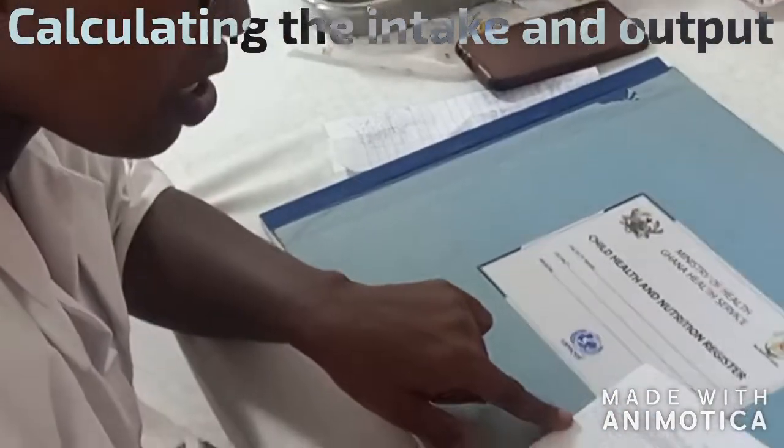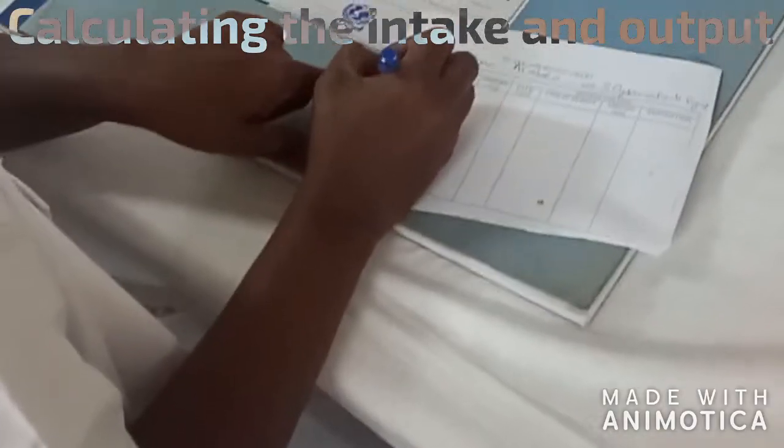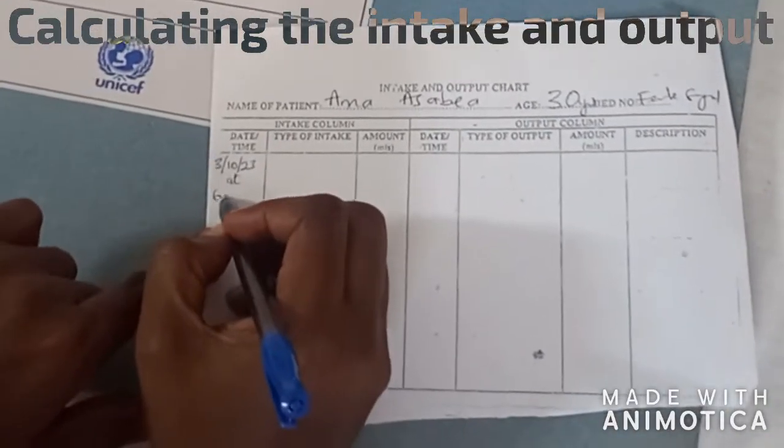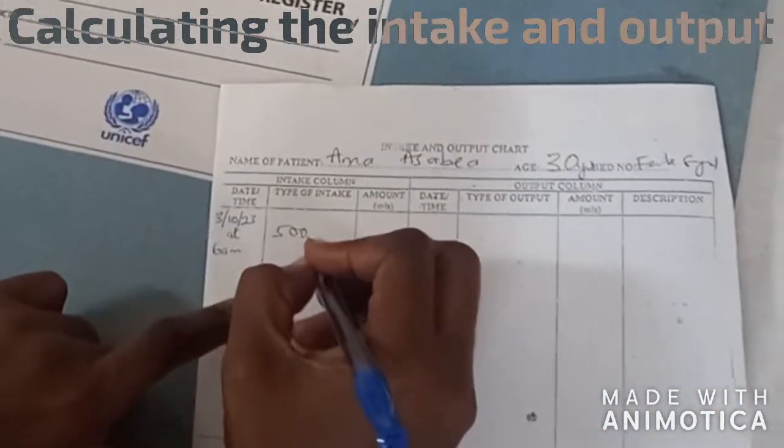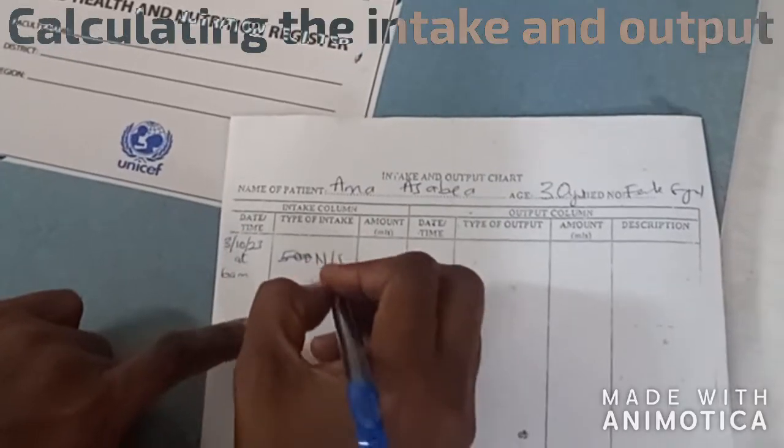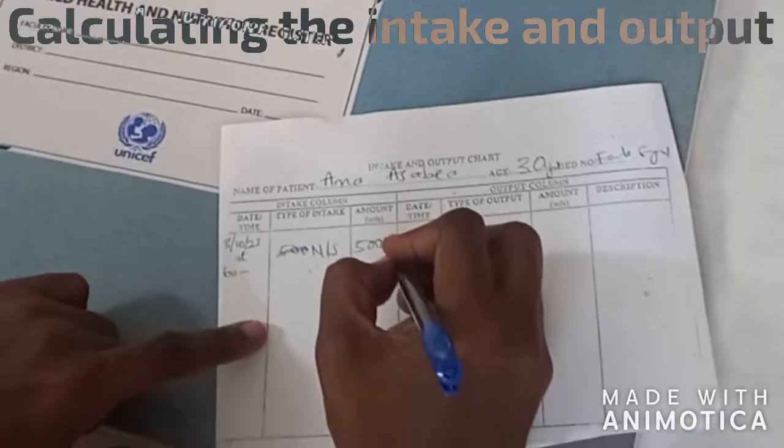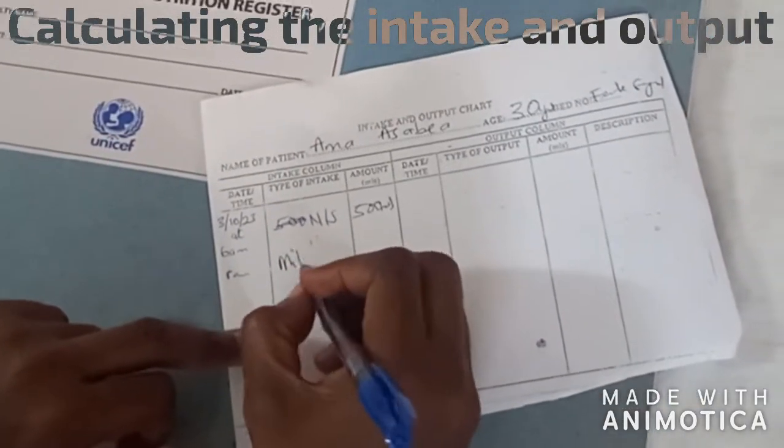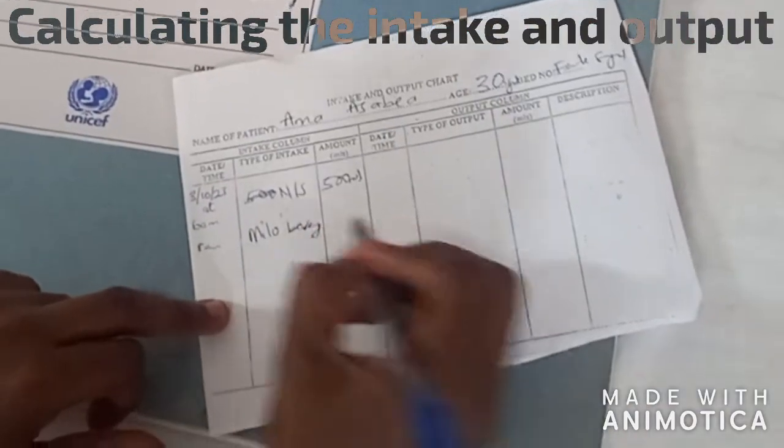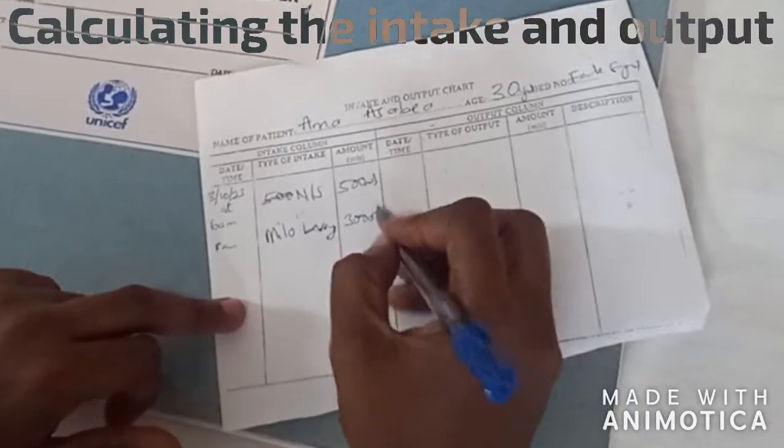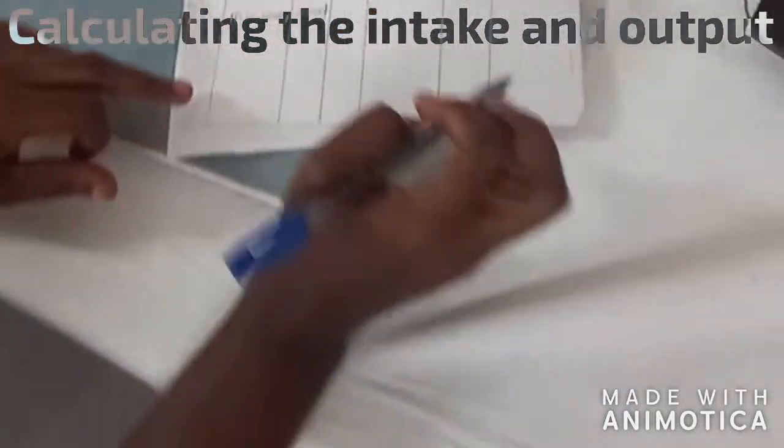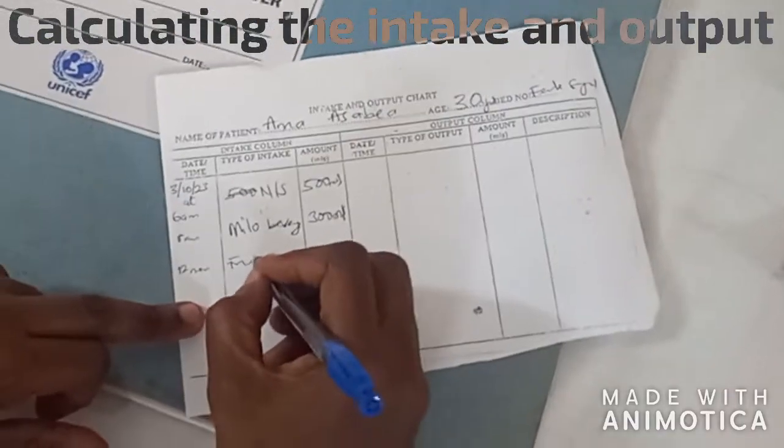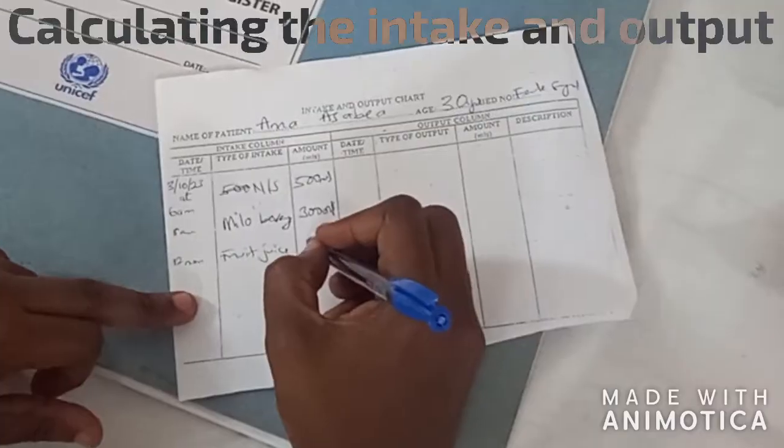Date and time here is for intake. So date is 3rd October 2023 at 6am. Patient was given 500 mls normal saline, that's type of intake. At 8am patient took Milo beverage, 300 mls. At 12 noon patient took fruit juice, 400 mls.